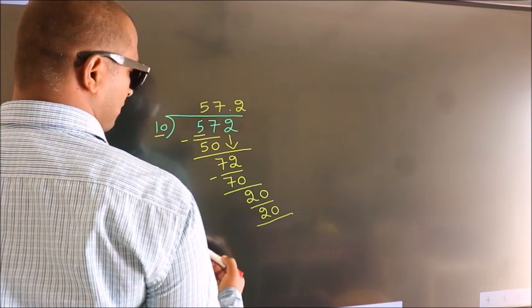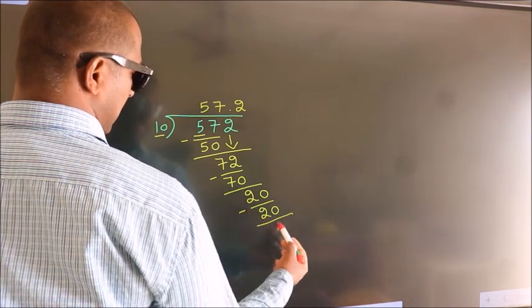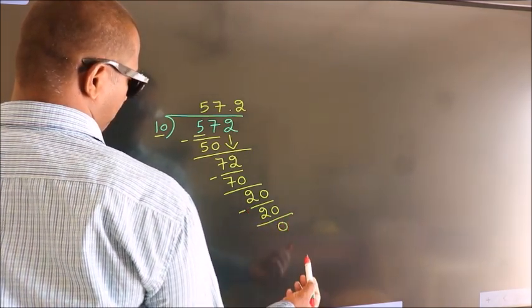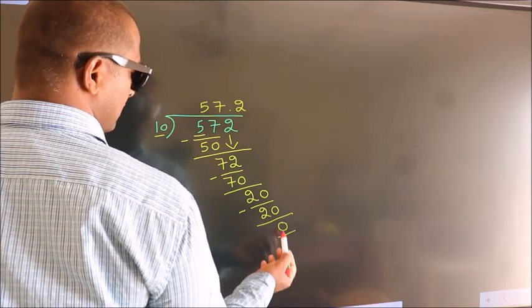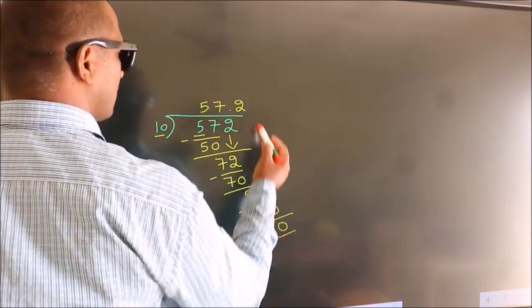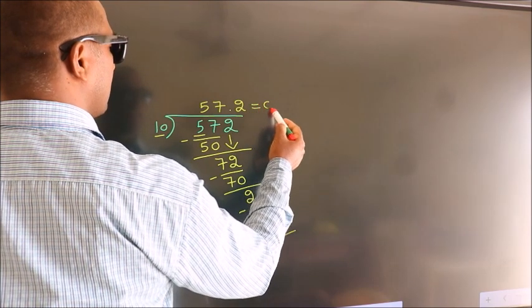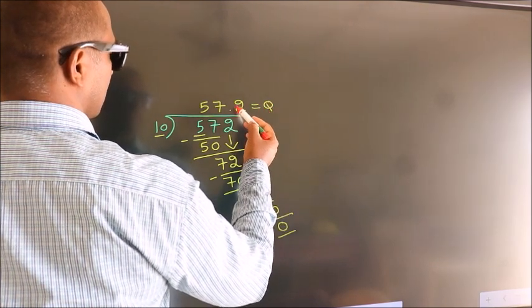Now we subtract, we get 0. Here we got remainder 0. So this is our quotient. Come on. See you next time. Thank you.